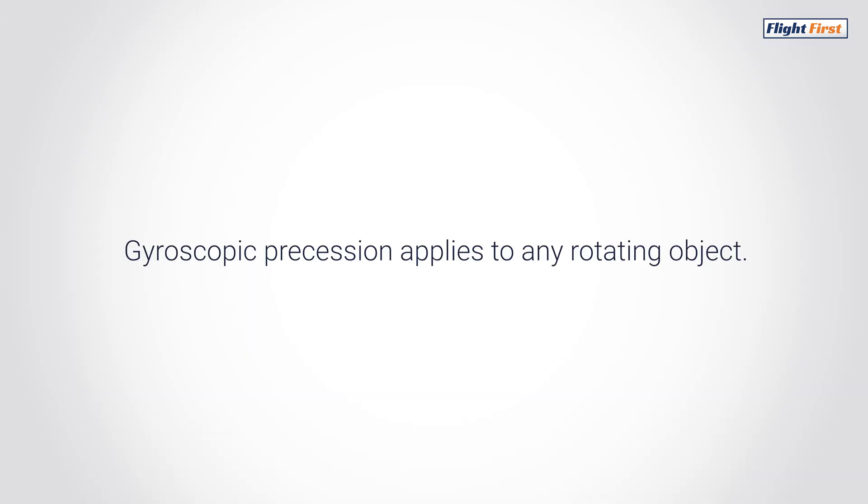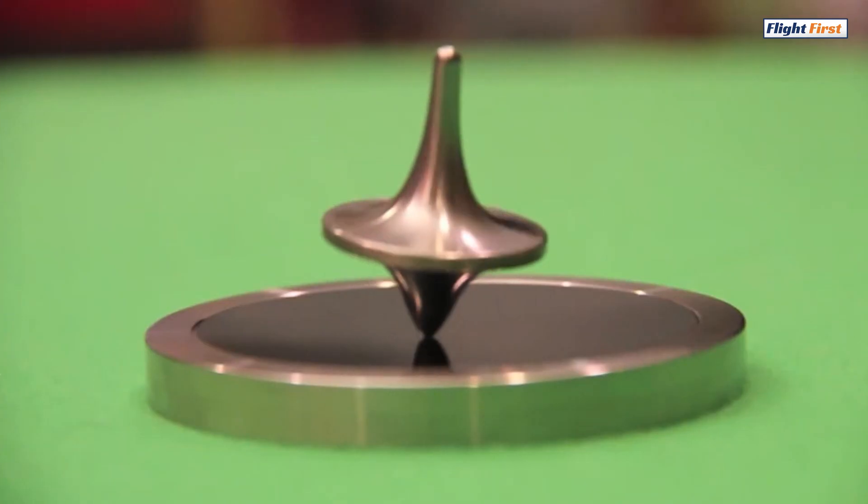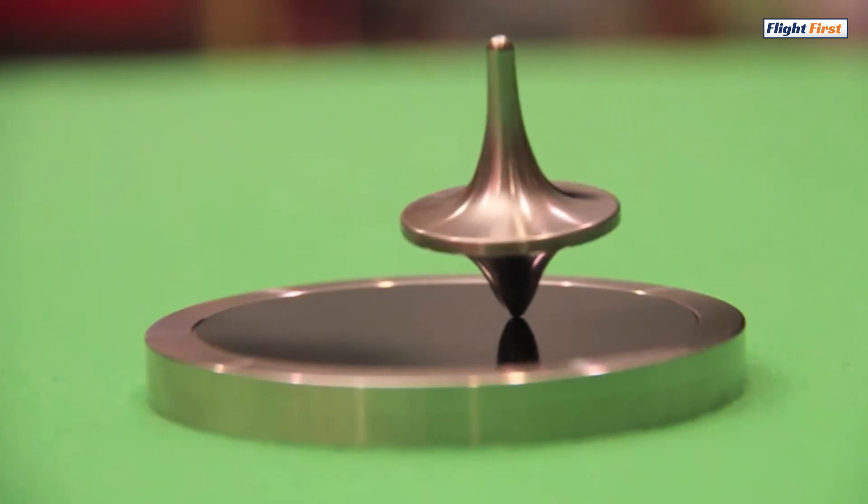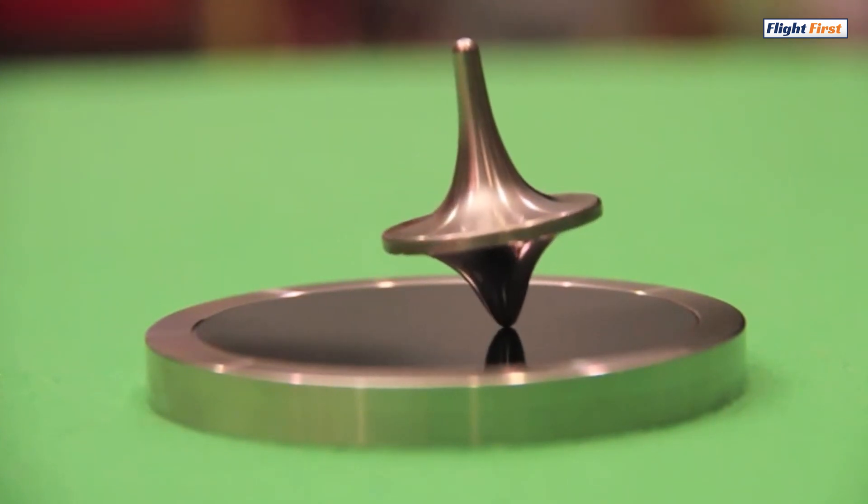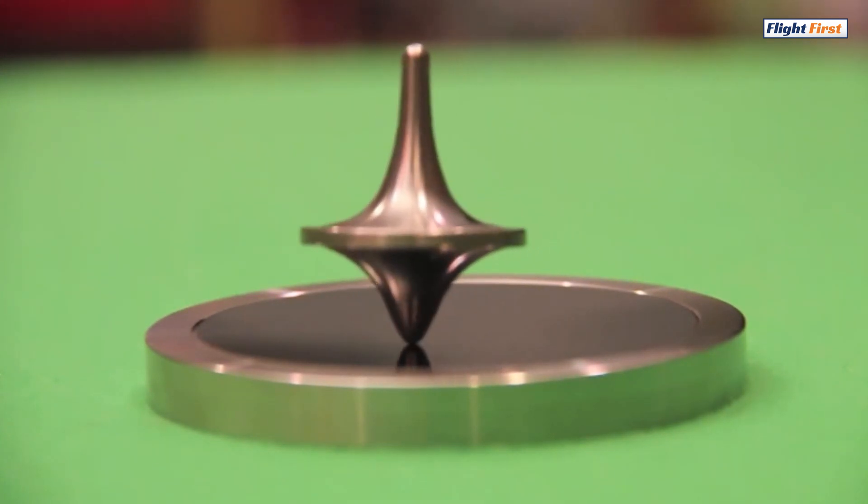Gyroscopic precession is important to us because it applies to all rotating bodies, which includes the rotor blades of the helicopter. If we were to apply a force on this spinning object, that force would actually not be manifested until 90 degrees later in its rotation.